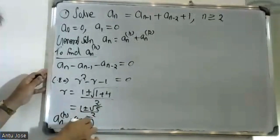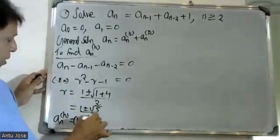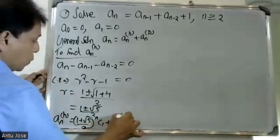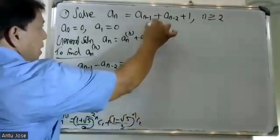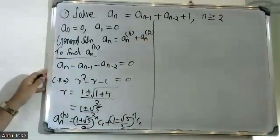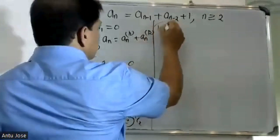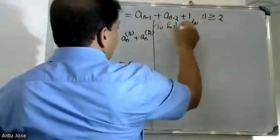The roots are (1 plus root 5) divided by 2, and (1 minus root 5) divided by 2. The homogeneous solution is a(n)^h equals C1 times (1 plus root 5 divided by 2) to the power n, plus C2 times (1 minus root 5 divided by 2) to the power n.